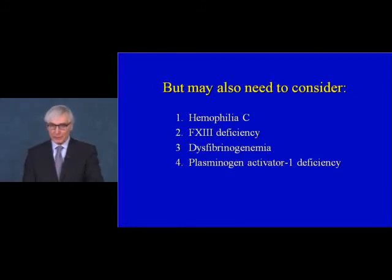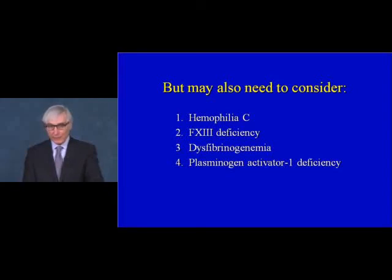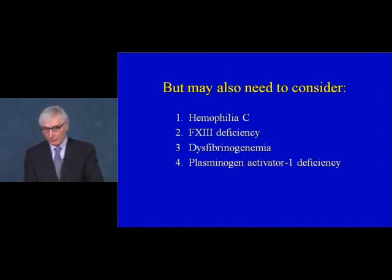In the differential diagnosis of hemophilia, one may also need to consider hemophilia C and three other rare conditions. Factor 13 deficiency does not show up in prolongation of either the prothrombin time or partial thromboplastin time. Dysfibrinogenemia means a fibrinogen which is not functional, screened for by a thrombin time. Finally, plasminogen activator inhibitor 1 (PAI-1) deficiency is an overactive fibrinolysis caused by deficiency of a regulator of fibrinolysis. Unfortunately, there is no good laboratory test for PAI-1 deficiency at the present time.